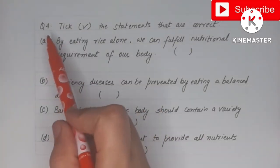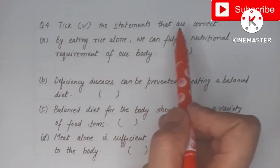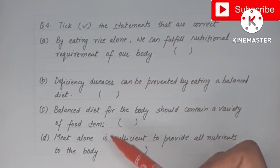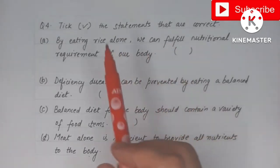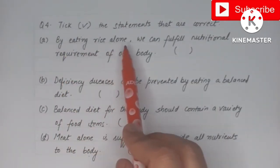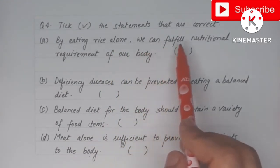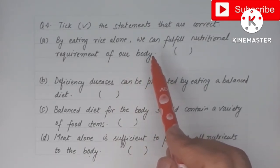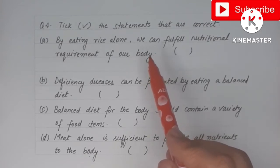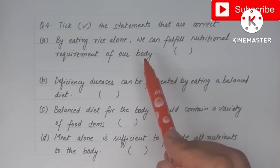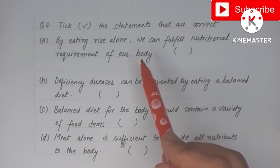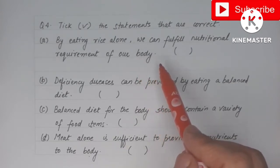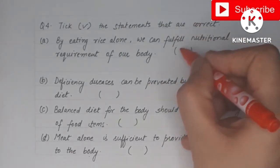Now coming to question 4, we have to tick the statements that are correct. The first statement is: by eating rice alone, can we fulfill the nutritional requirement of our body? Rice is a rich source of carbohydrates and has a little amount of protein, but it has no fat, vitamins, or minerals. So it cannot fulfill all nutritional requirements — this statement is wrong.